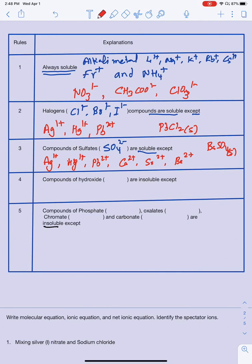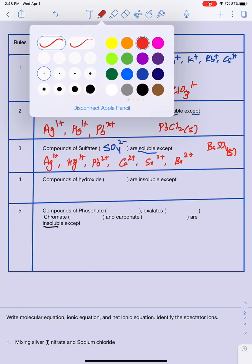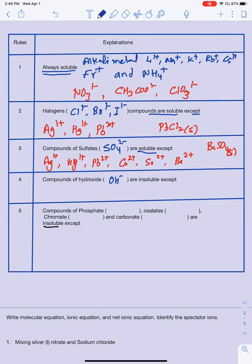Now moving to the insoluble side. Rule 4: compounds of hydroxide (OH−) are mostly insoluble, except when paired with Rule 1 cations — alkali metals and ammonium — which make them soluble. The other exception is barium (Ba2+): Ba(OH)2 is actually soluble and would be written as aqueous, not solid.